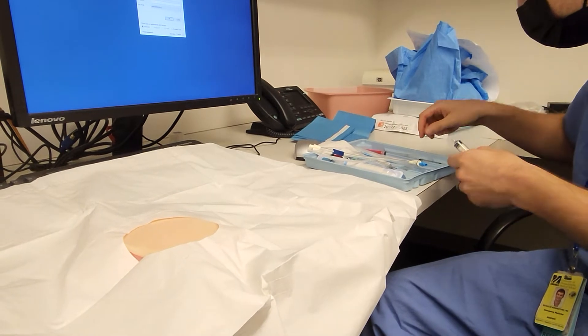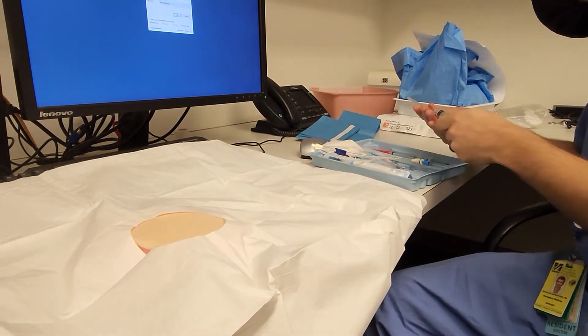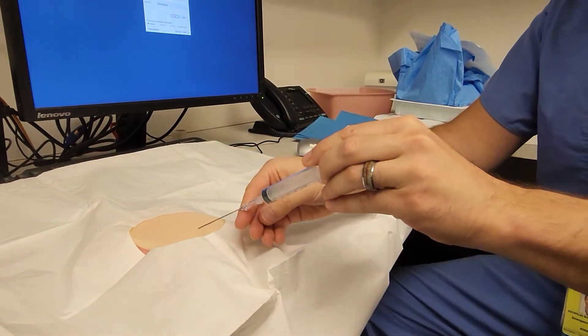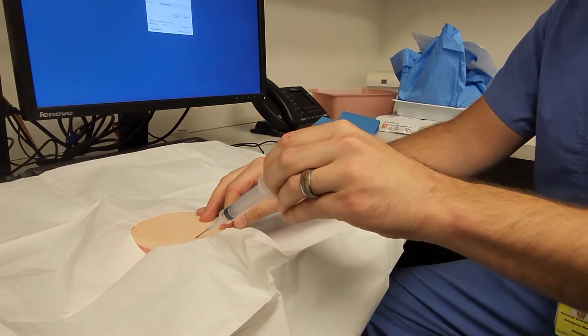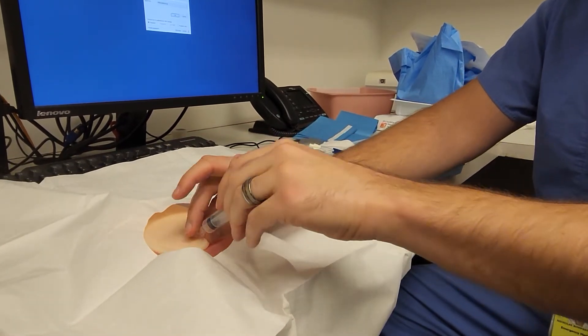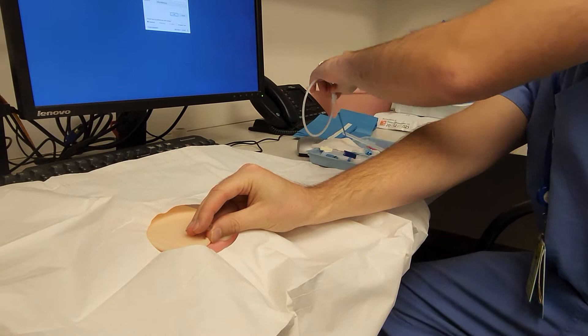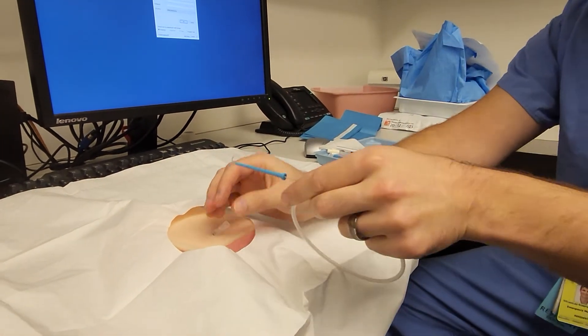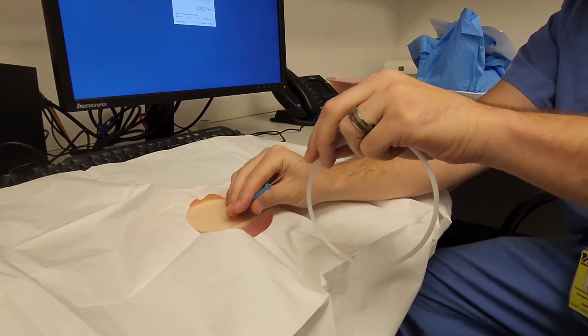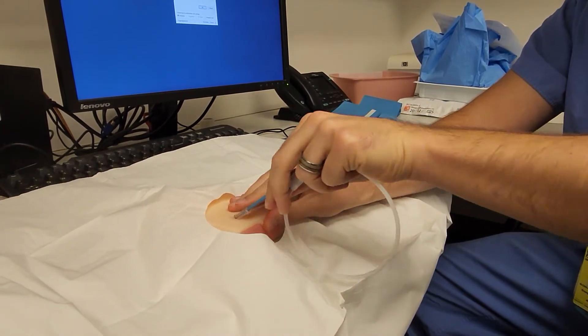You will then use your finder needle and ultrasound, going in at 45 degrees, following the needle tip until you get flash. Once you get flash, stabilize, remove the syringe, and then use your guide wire and insert it.